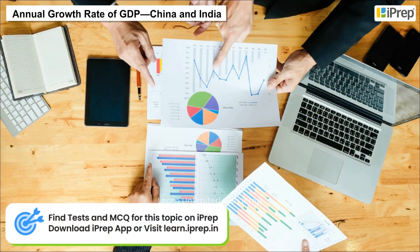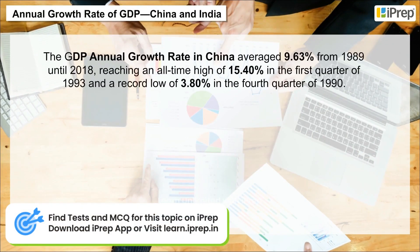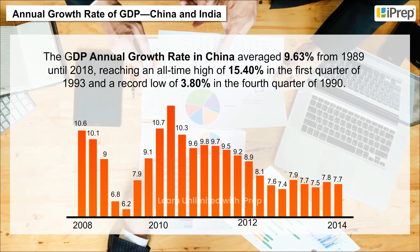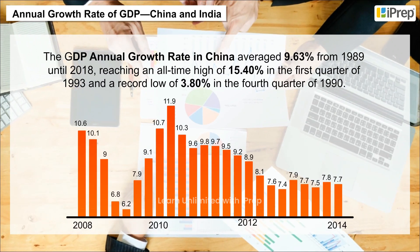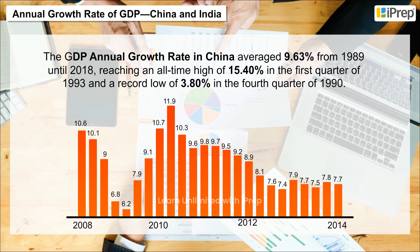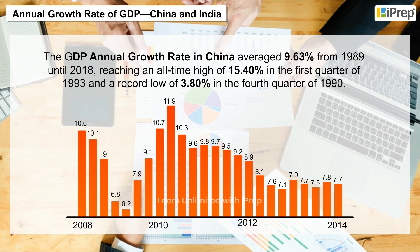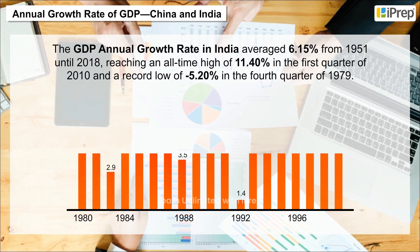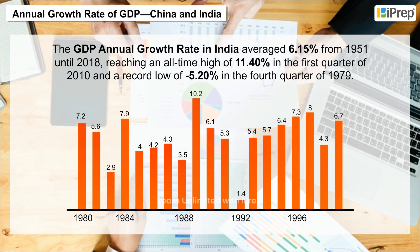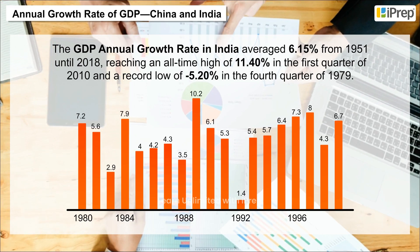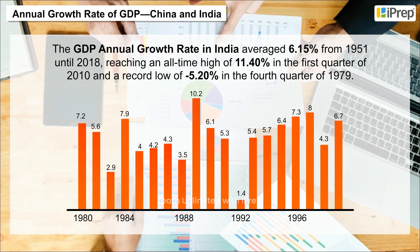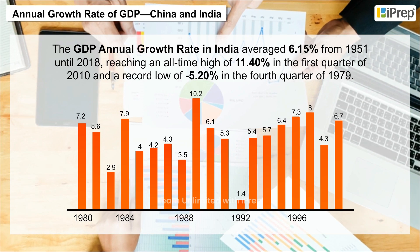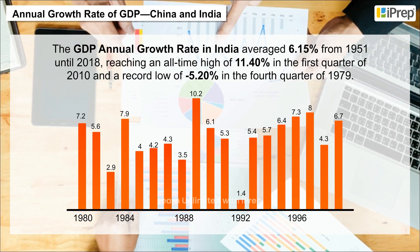The GDP annual growth rate in China averaged 9.63 percent from 1989 until 2018, reaching an all-time high of 15.40 percent in the first quarter of 1993 and a record low of 3.80 percent in the fourth quarter of 1990. The GDP annual growth rate in India averaged 6.15 percent from 1951 until 2018, reaching an all-time high of 11.40 percent in the first quarter of 2010 and a record low of minus 5.20 percent in the fourth quarter of 1979.